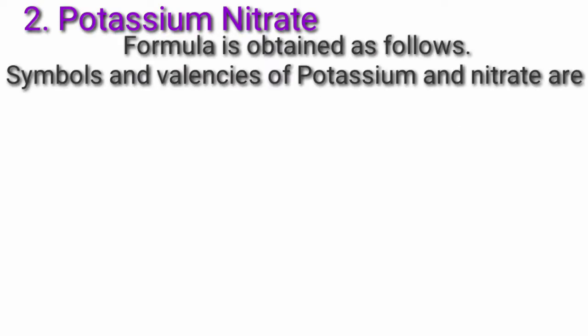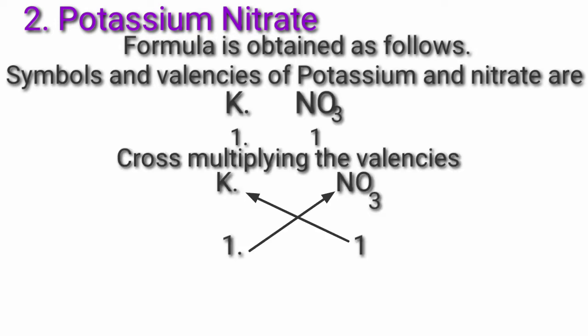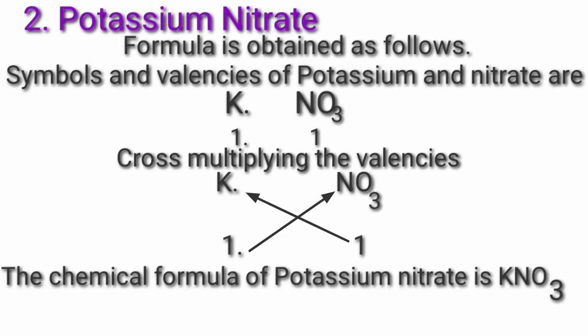Second, potassium nitrate. Formula is obtained as follows. Symbols and valencies: potassium valency 1, nitrate valency 1. Cross multiplying the valencies — K multiplied by 1, NO3 multiplied by 1. Therefore, the chemical formula of potassium nitrate is KNO3.